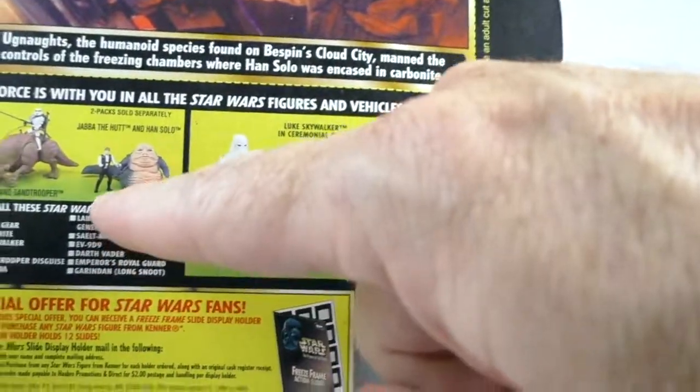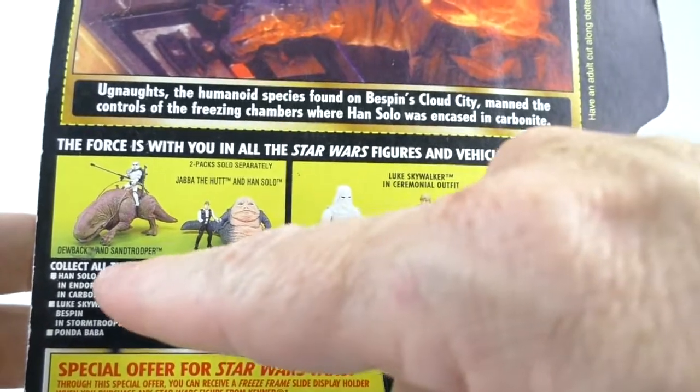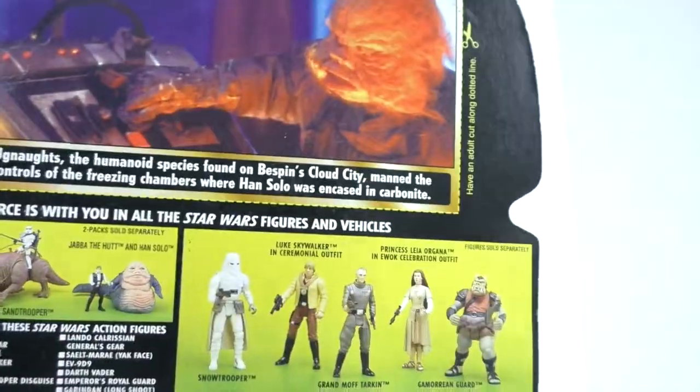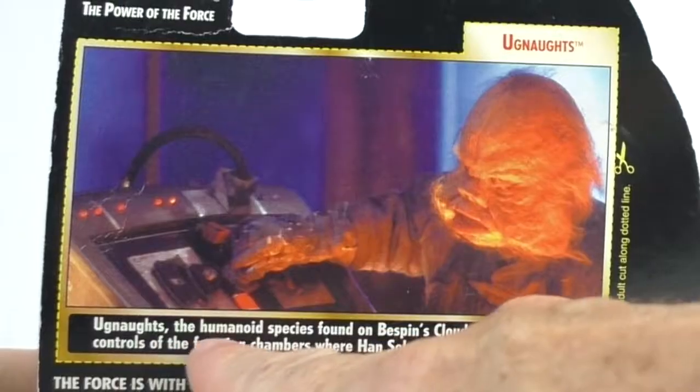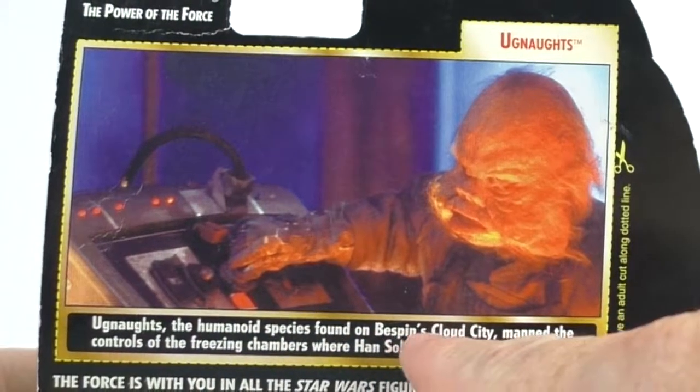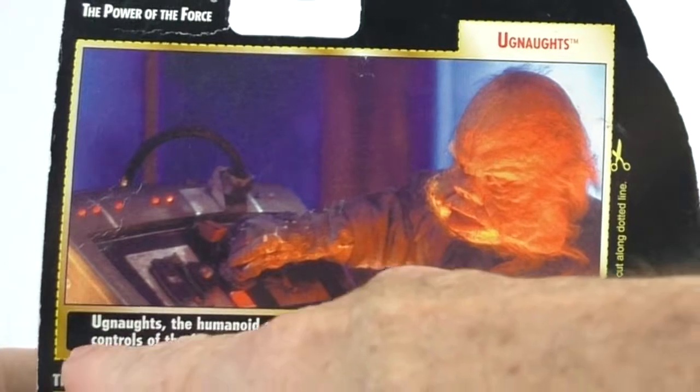You can also get the Jabba the Hutt and Han Solo and Boba Fett and Sand Trooper. Then here you get the Ugnaught card.